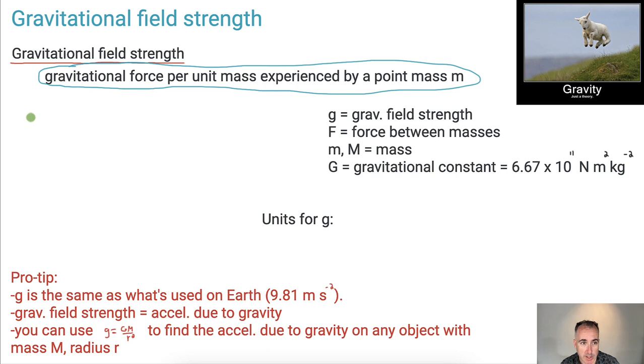We use lowercase g for this, and we say g equals F over m. See, it's a force per unit mass. So if you have some object that has a mass m, then the force divided by its mass tells you the gravitational field strength.